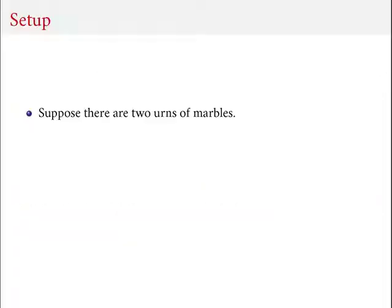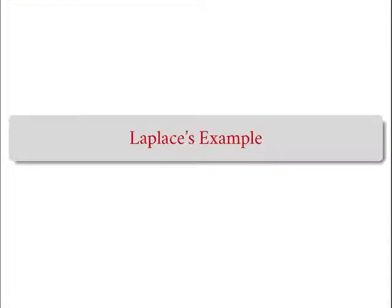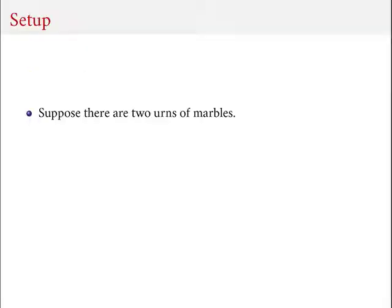Here is an example from the probability theorist Laplace. Suppose that there are two urns of marbles in front of you. In the first urn to your left, urn one, there are three red marbles and one green marble. In the second urn to your right, there is one red marble and three green. So in each of these two urns, there is a different distribution of red versus green marbles.